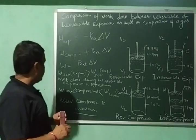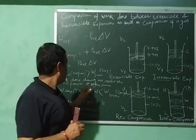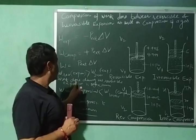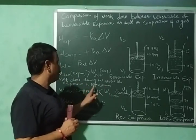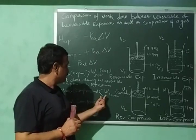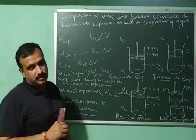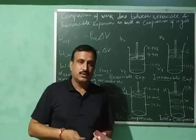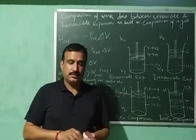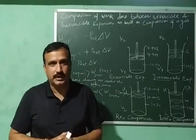To conclude: work done during reversible expansion is more than work done during irreversible expansion, and work done during reversible expansion is maximum. Work done during reversible compression is less than work done during irreversible compression, and work done during reversible compression is minimum. I hope you understood this comparison — thank you for watching, please like, share, and subscribe.